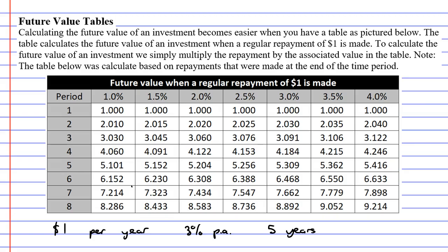Now, if you look at the table, we can see where 3% is. 3% is up here. And we can see where five years are, or five periods. It's over here. And we can see that they line up to a certain number, 5.309.